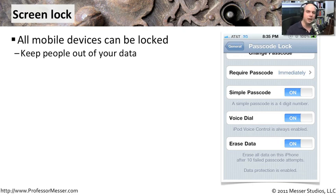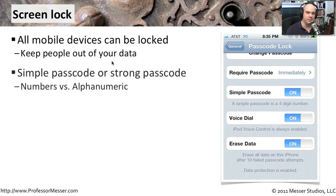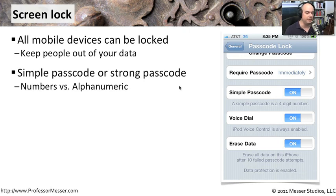One technique is to enforce that our screen locks up when we're not using the device. Mobile devices would keep people out of the data because they'd have to type in a passcode to get into the device. These passcodes can be very simple — they can be four digits. We can also configure our systems to have a non-simple password, one that's a little stronger, where you have to type in an alphanumeric message just to be able to gain access into the device itself.